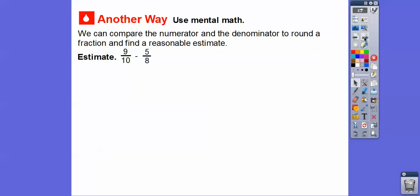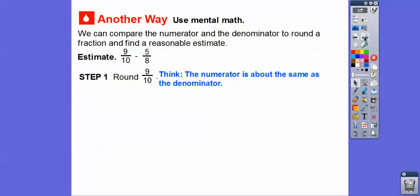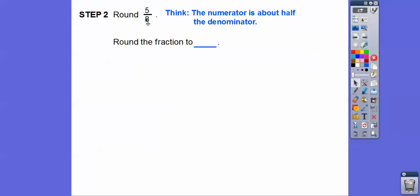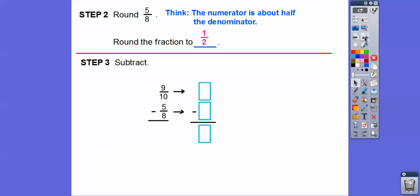We can compare the numerator and denominator to round fractions and find a reasonable estimate. Here we have 9 tenths minus 5 eighths. Think about 9 tenths — the numerator is almost as big as the denominator. If the numerator equals the denominator, it equals 1. So 9 tenths is almost 1 because 9 is close to 10, so we round it to 1. And 5 eighths — the numerator 5 is about half the denominator; 4 eighths would be exactly 1 half, so we round 5 eighths to 1 half. Then 1 minus 1 half equals 1 half. So 9 tenths minus 5 eighths is about 1 half.